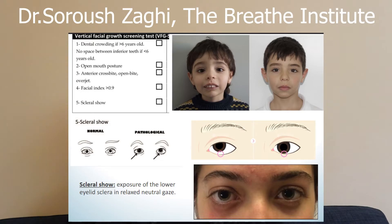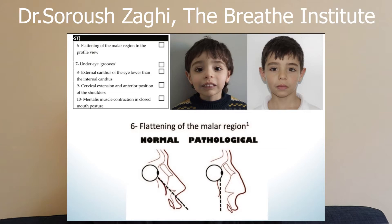The next thing is the flattening of the malar region — referring to your cheekbones. From the eye to the bone should have some angle, but in children with craniofacial abnormalities, that angle will start to flatten. One fascinating thing visible in the diagram is a bump on the nose that develops. I have that nose bump — I thought it was from my heritage, but it's actually a result of craniofacial development.